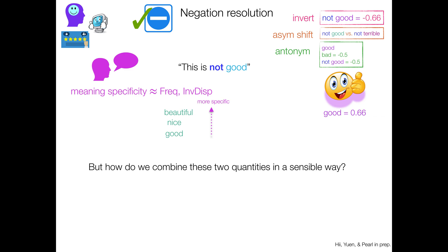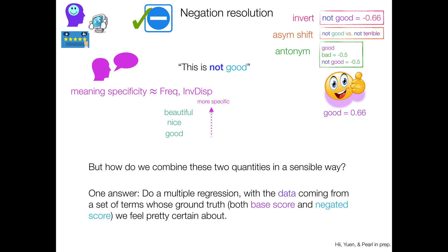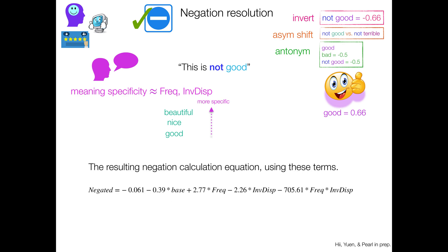So we calculated this as well from that same 82.8 million Amazon product review corpus, and we took the approach that people tend to use for this kind of analysis of dividing our corpus into sort of 10 equal-sized sections of contexts. Frequency and inverse dispersion is like heuristics of meaning specificity. How do we combine these two quantities in a sensible way? And one answer is to do a multiple regression with the data coming from a set of terms whose ground truth, both the base sentiment score and the negated score we feel pretty certain about. And we have data like this. We have 42 terms that were extracted and manually checked from a particular study that looked at both base sentiment and negated sentiment.